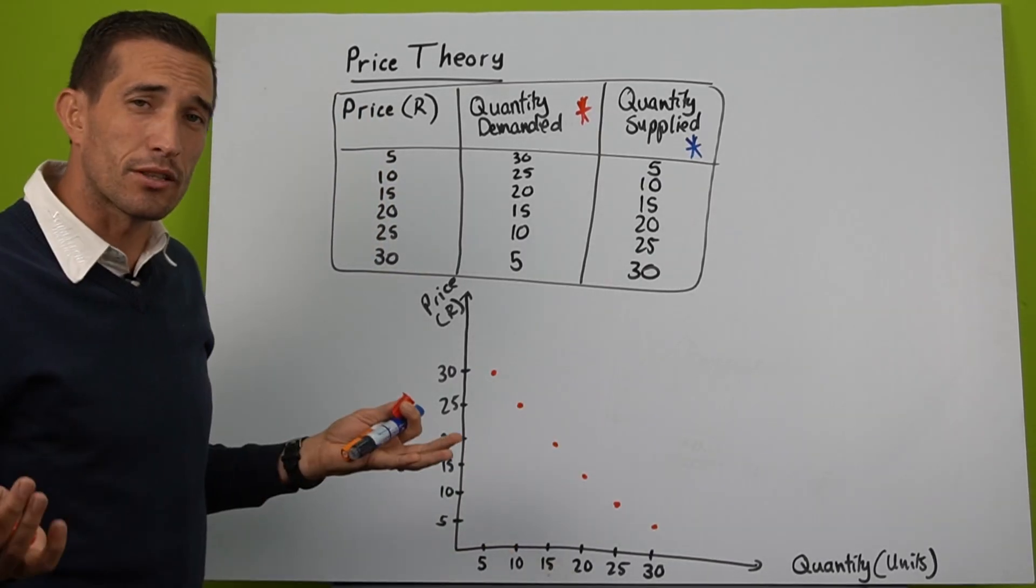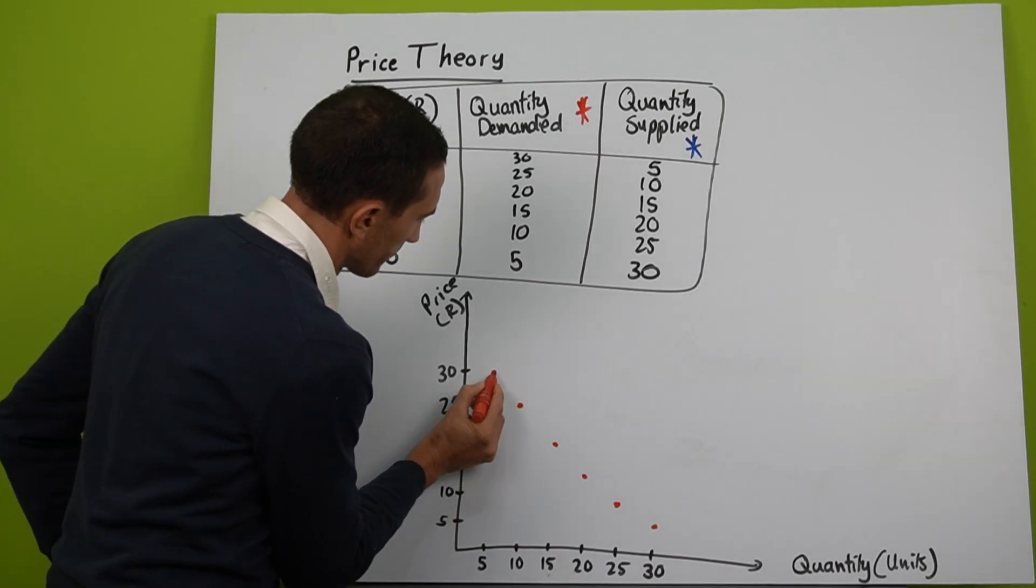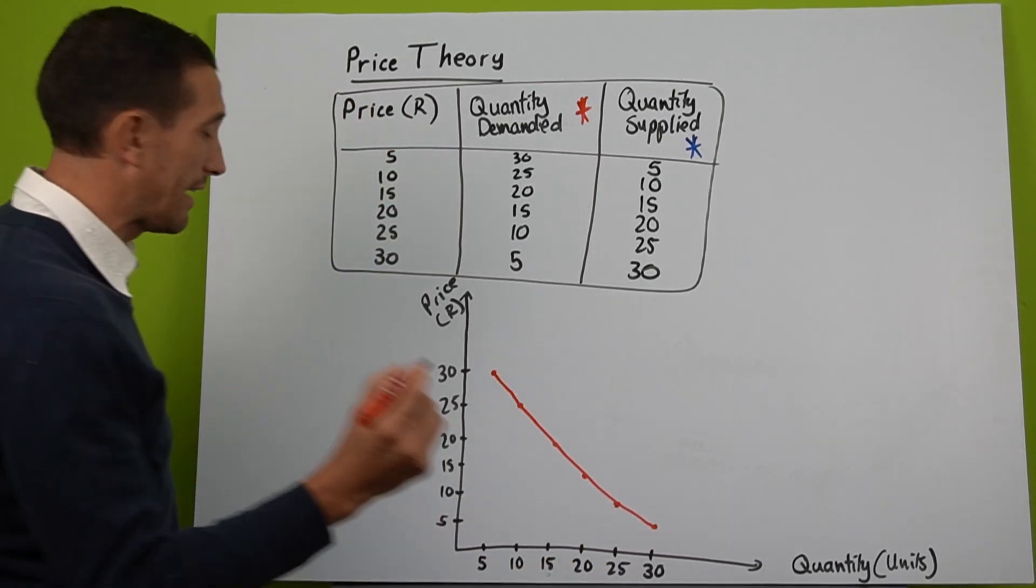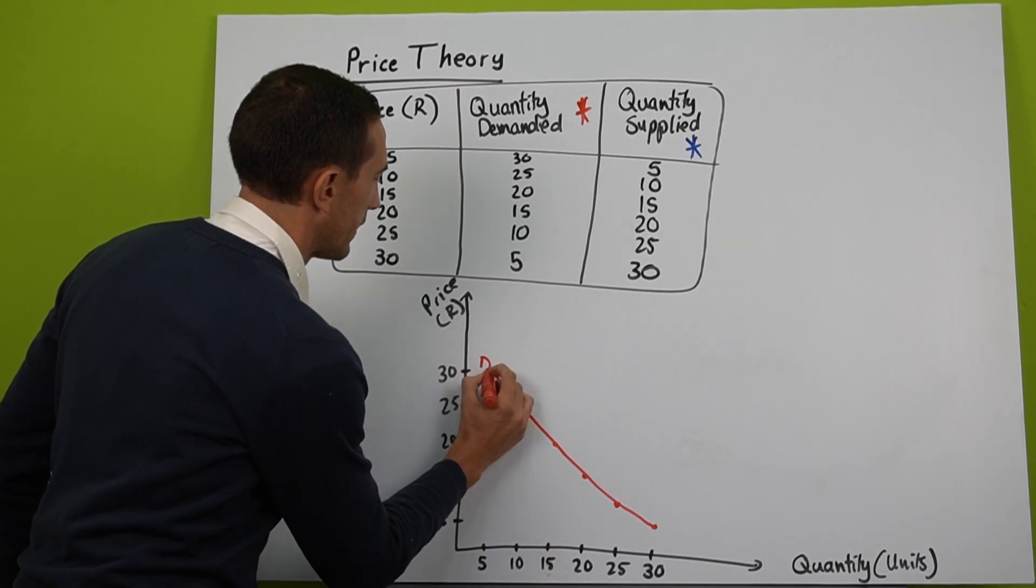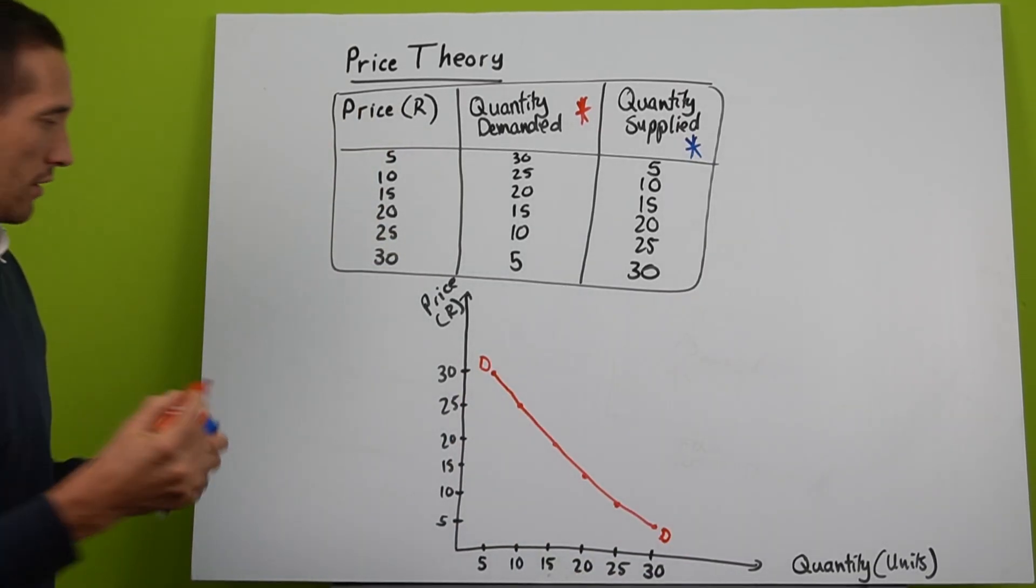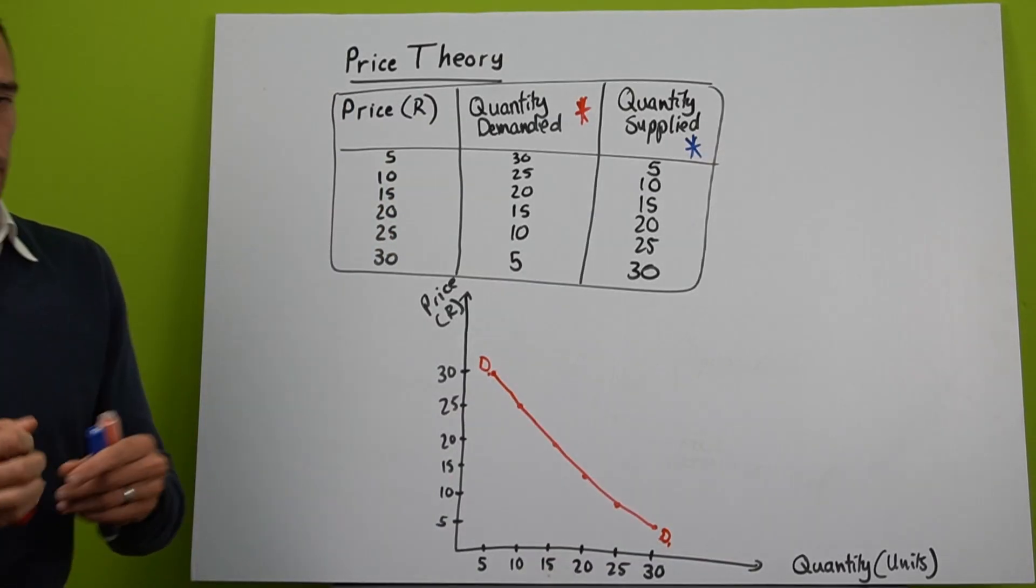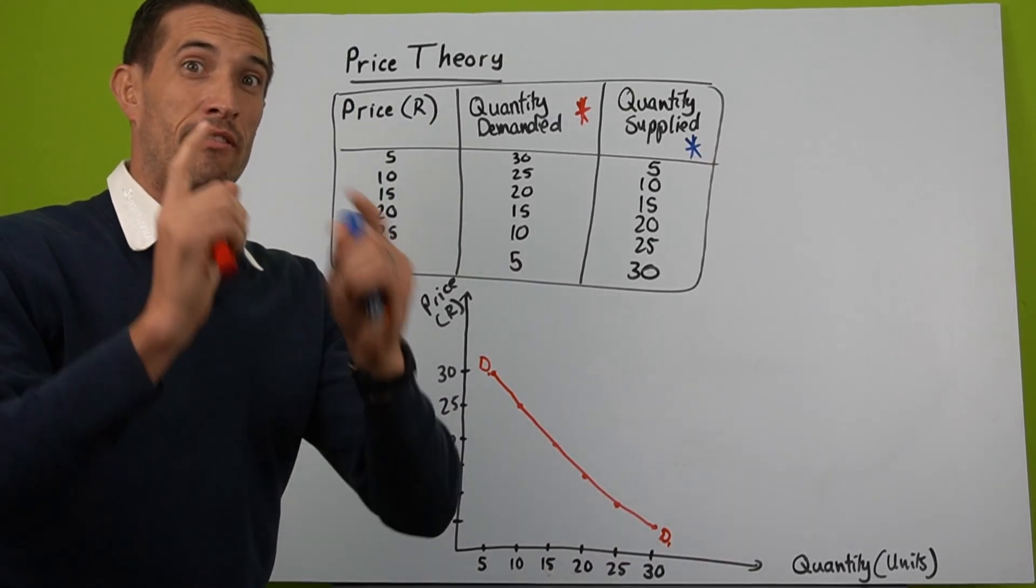Now what happens is we just connect the dots. Important that you have to remember is you need to name it demand. And I'm going to say D1, D1, because this gets interesting in our next videos.